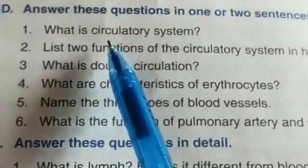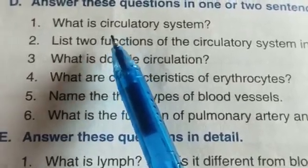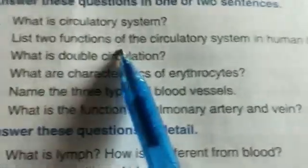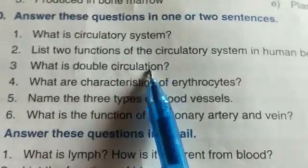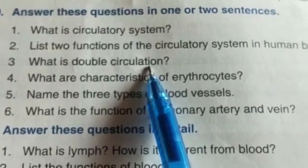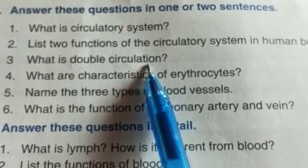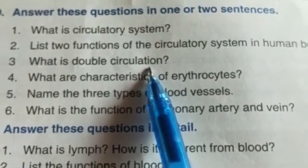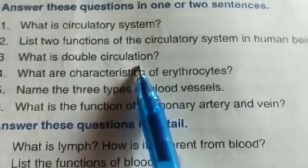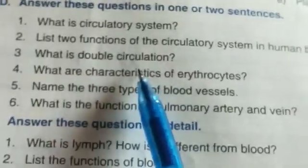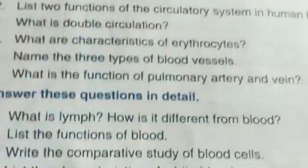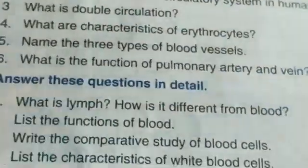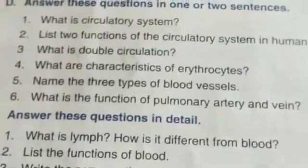Short answer questions: what is the circulatory system — you need to define it and write two functions. First, it carries nutrients and oxygen to all parts of the body. Second, it carries waste from all parts of the body. What is double circulation — blood circulates twice through the heart; that type of circulation is called double circulation.